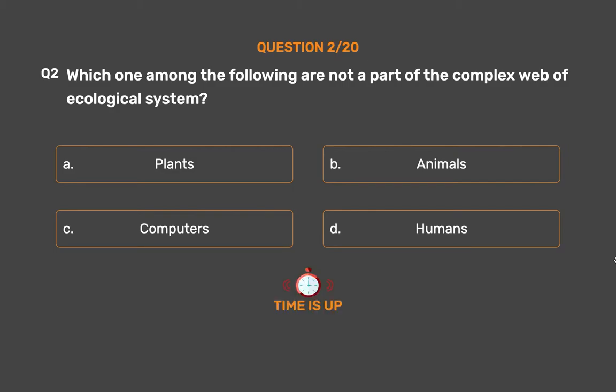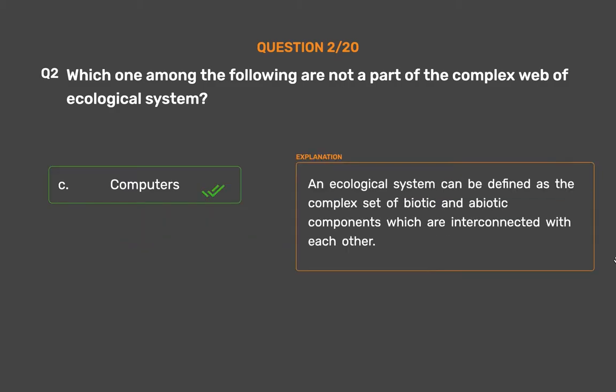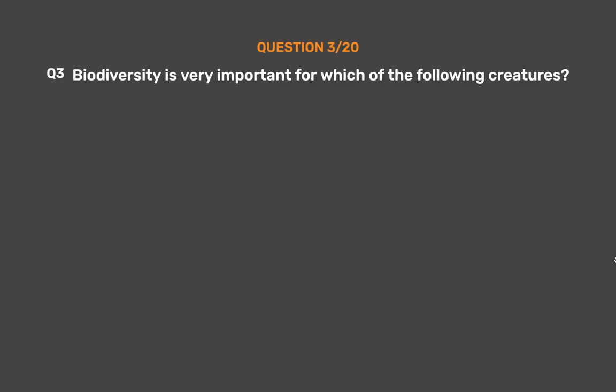The correct answer is Option C: Computers. An ecological system can be defined as the complex set of biotic and abiotic components which are interconnected with each other.